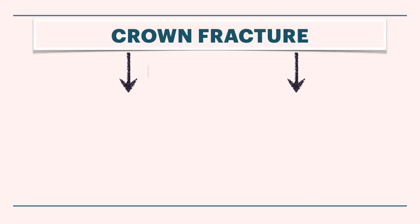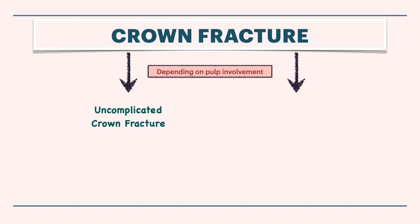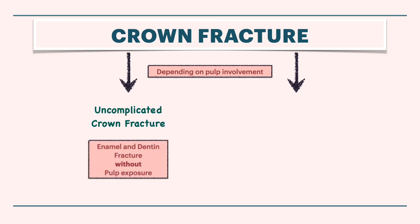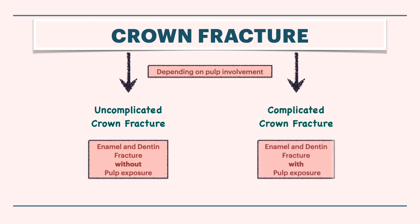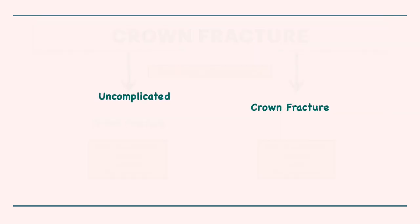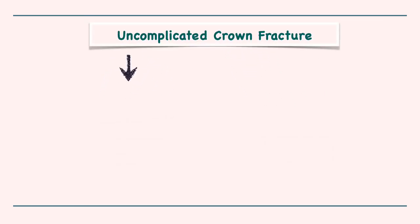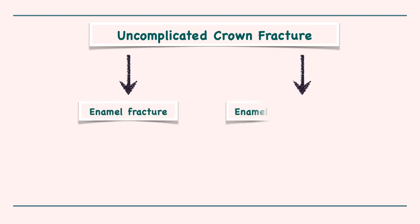Crown fracture can be divided into two groups based on the involvement of dental pulp: uncomplicated crown fracture, where there is no pulp exposure, and complicated crown fracture, that presents with an exposed pulp. In uncomplicated crown fracture, there may be only enamel fracture or enamel and dentine fracture.